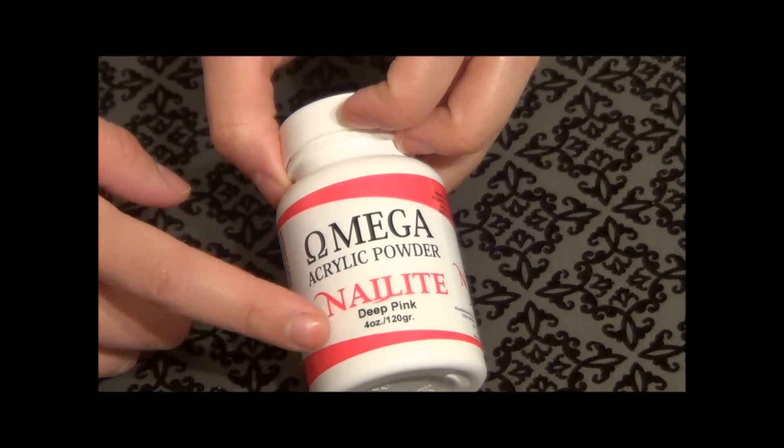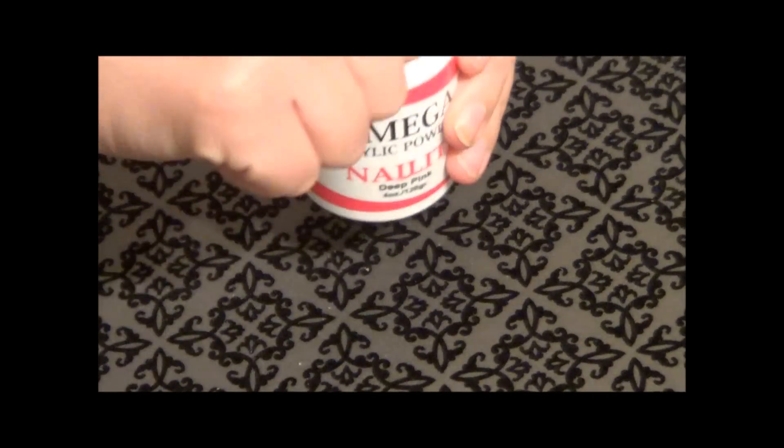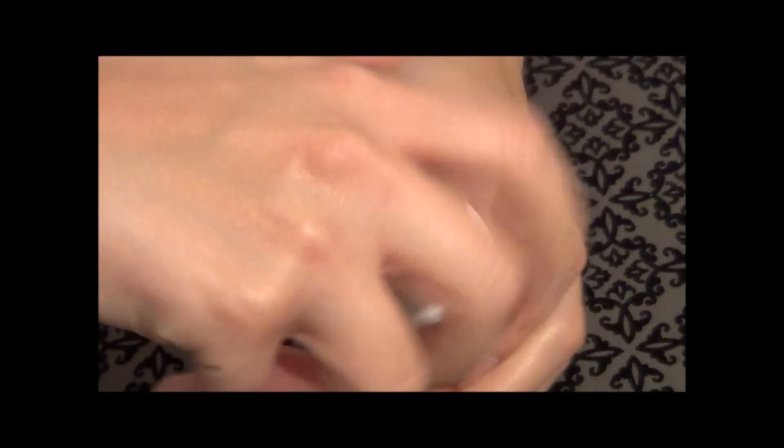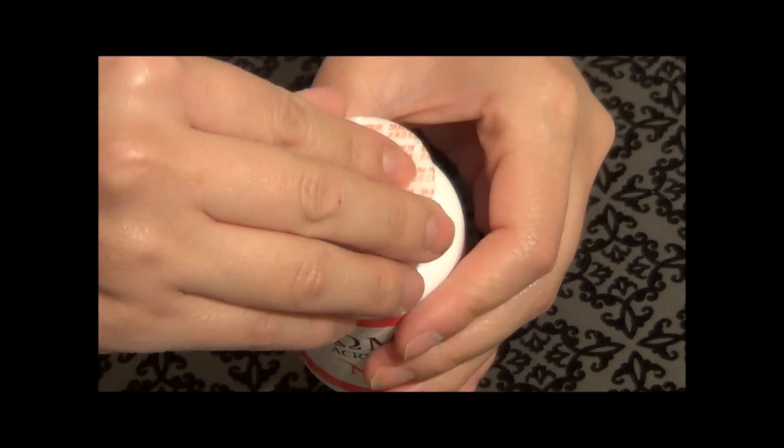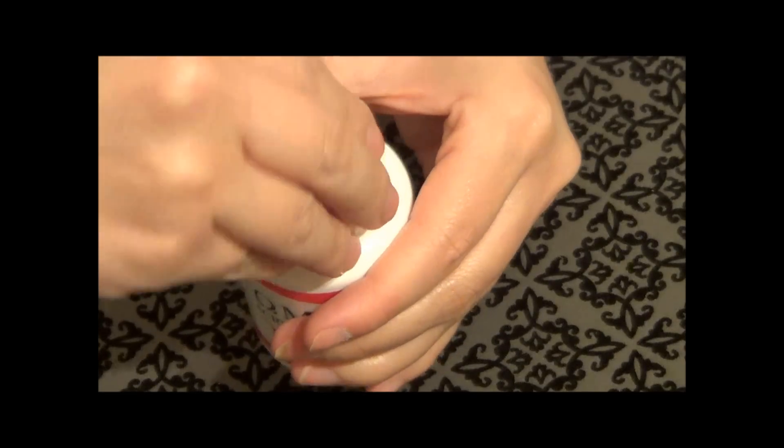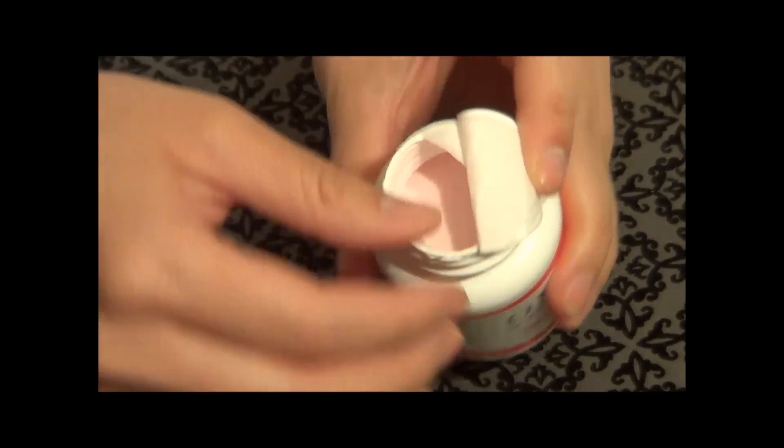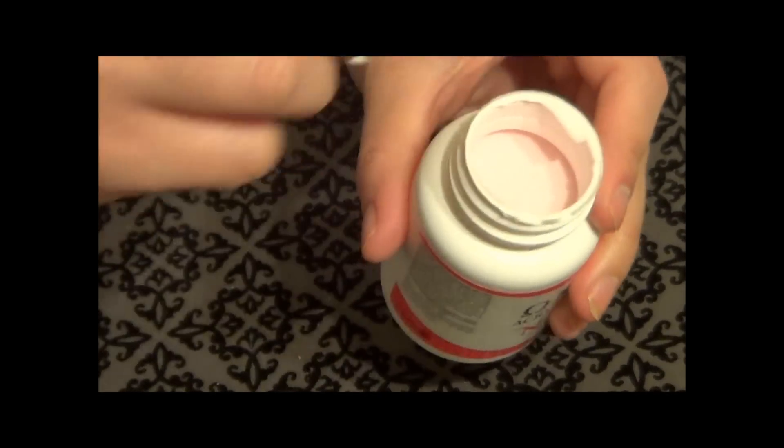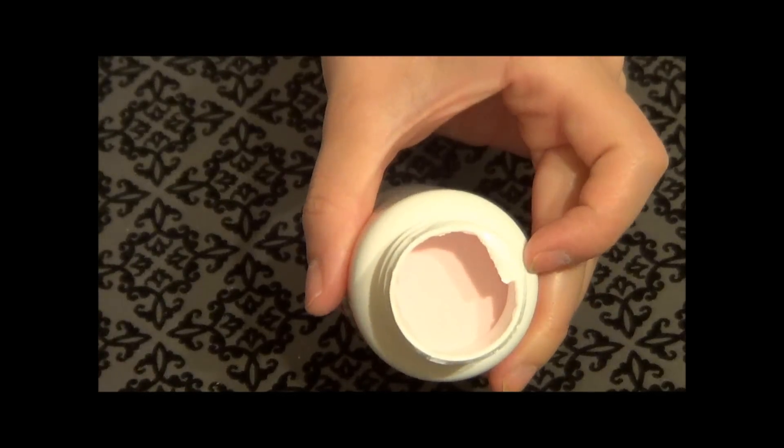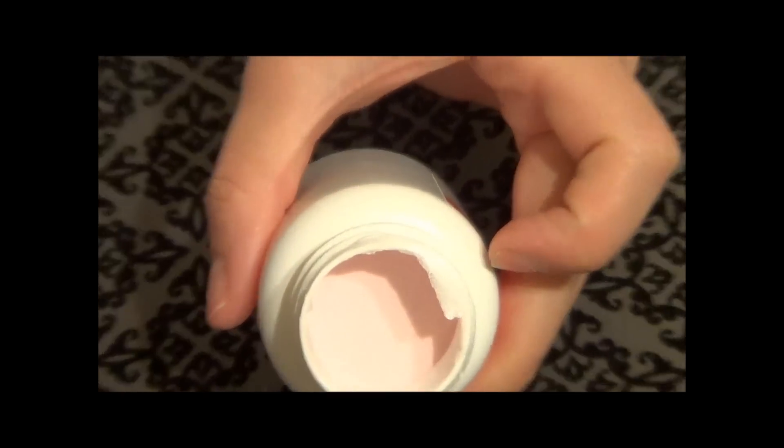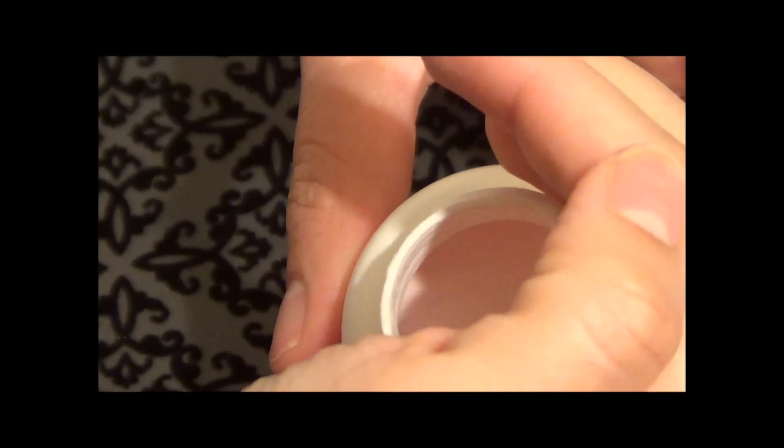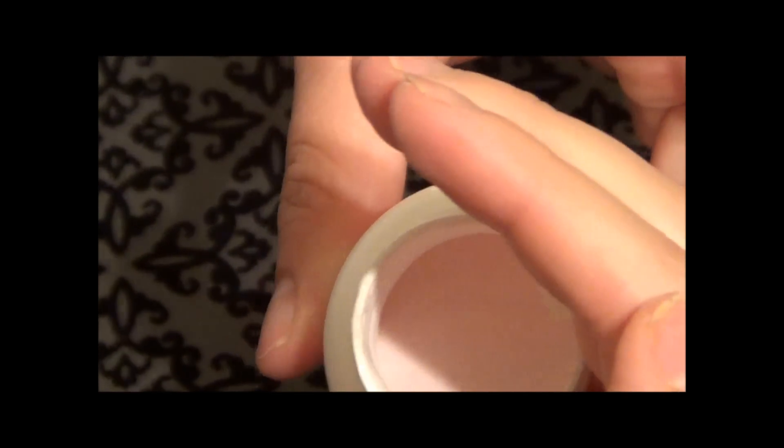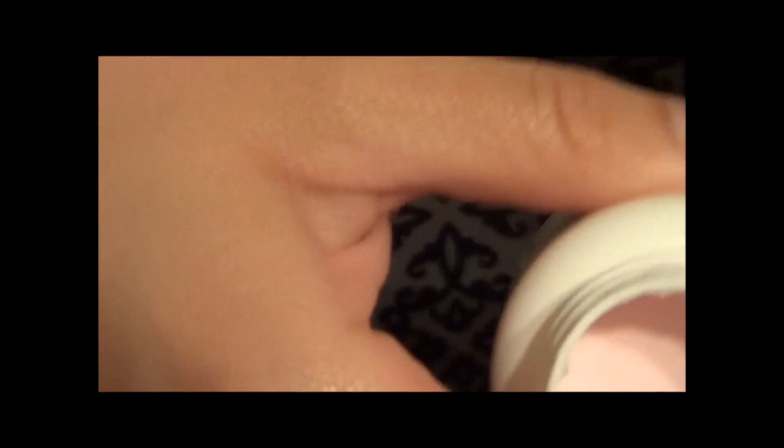Voy a usar el color Deep Pink. Y miren, creo que sí me va a gustar. Hay que calarlo en una uña y a ver qué tal se mira el color. Si quieren que se los muestre, les haga comparación con el color, me dejan saber. Nomás que con la luz como que no se va a apreciar bien. Pero ahí como que se mira. Sí se mira rosa.